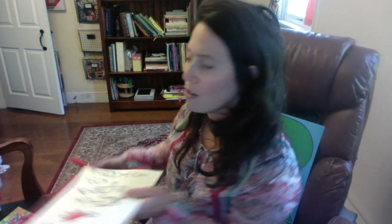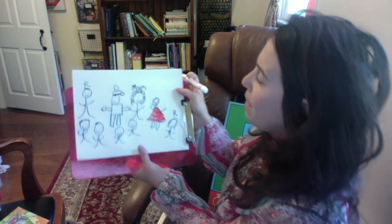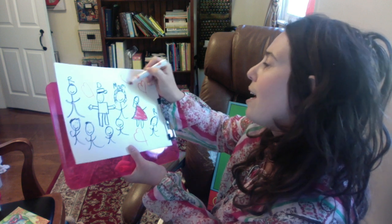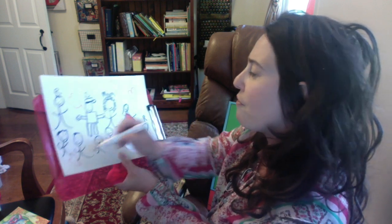Thumbs up if you liked that book. Sometimes in a family, people might fight, but the important part is that we say I'm sorry, we talk it out, and we become friends again. You know what? I'm going to draw hearts in my family picture, because a family always has a lot of love — there's lots of love that comes from a family.